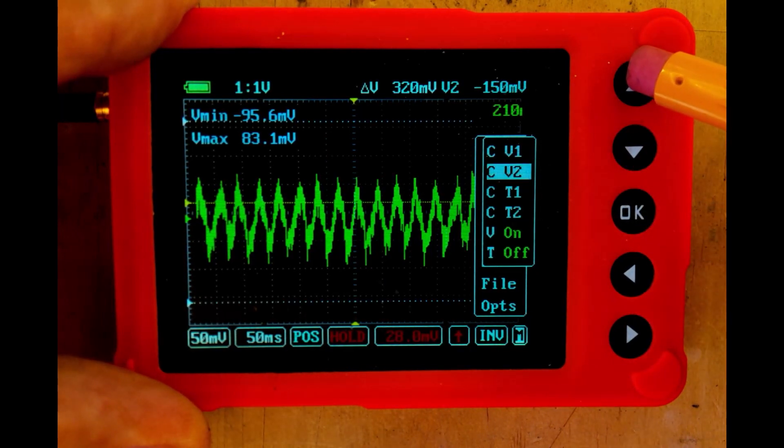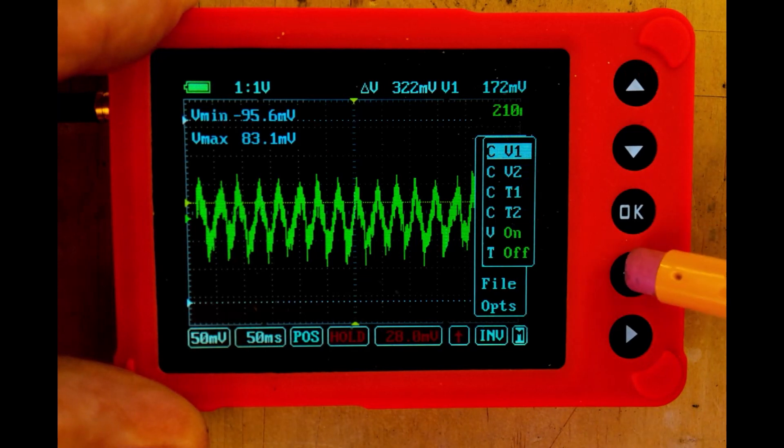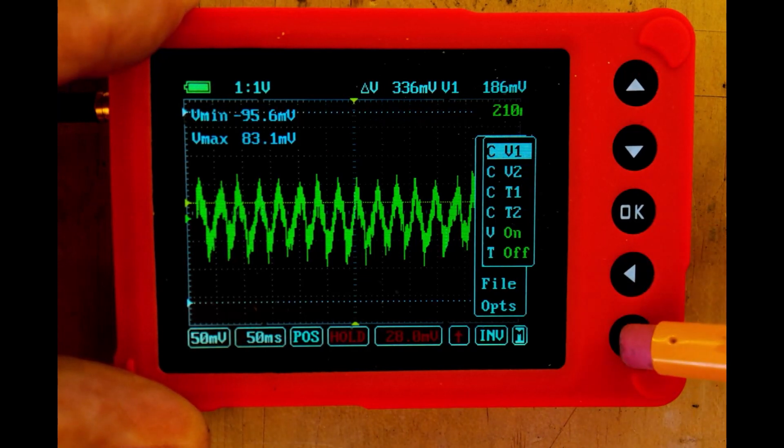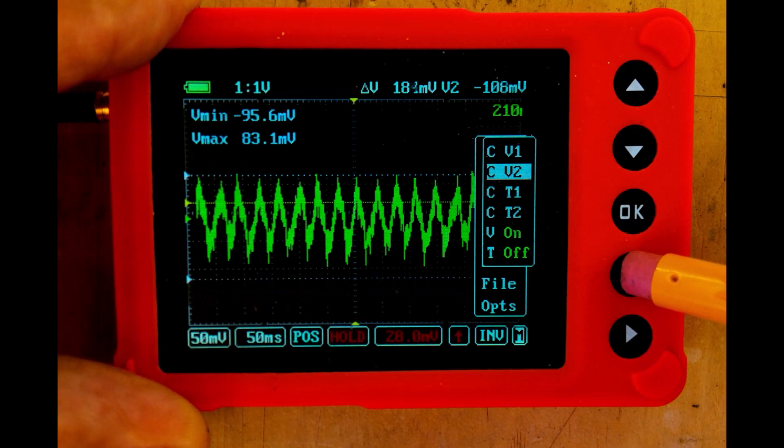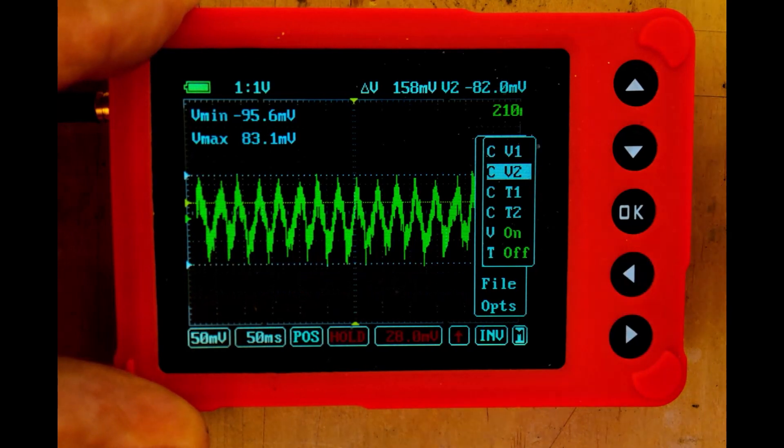Now we can move up to vertical cursor number one, and we can bring vertical cursor one down to the top of my pattern. And then I can move down to vertical cursor two, and I can move that up to the bottom of the pattern. And then we're going to have our values at the top. We've got our delta of 150 millivolts.